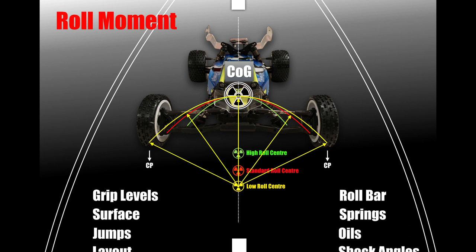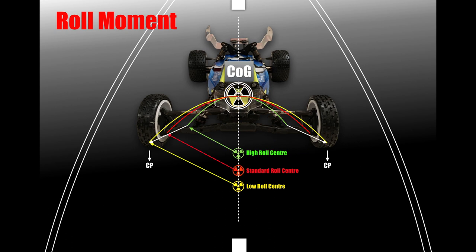Fundamentally, if you can understand how these roll centres are acting on the car with the centre of gravity creating that roll moment, you start to appreciate what roll centre and roll moment do to make your car perform the way you want it to. Going back to those four fundamentals to set the roll centre, you can then move through your adjustments — springs, bars, oils, shock angles, wheel bases, track width — all that kind of stuff to make the car behave around your roll centre.